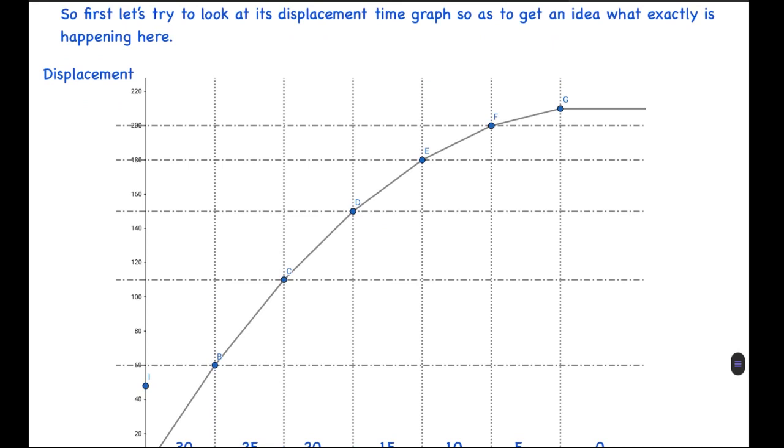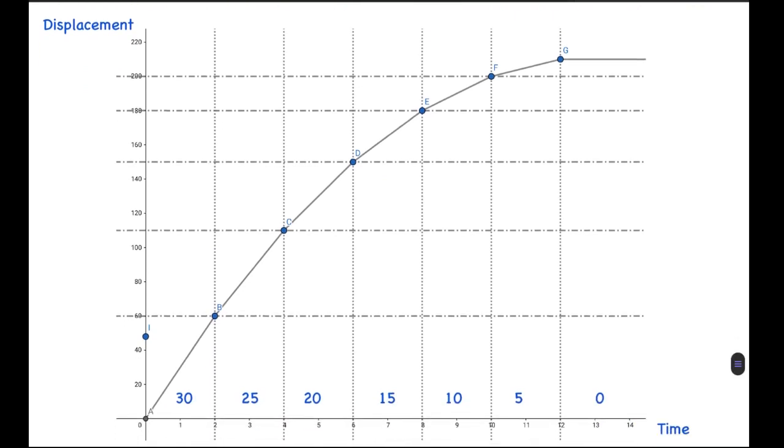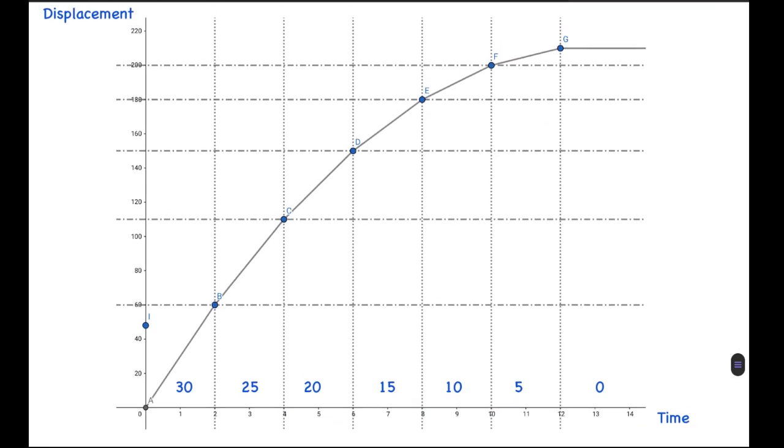First, let's try to look at the displacement-time graph as I said, to get an idea what exactly is happening here. The leopard starts from position A initially, and the deer was at position I initially. Initially in the first two seconds, the velocity was 30 meters per second. Gradually after every two-second interval, as I have marked in the graph, the slope of this curve, which is basically displacement over time or the velocity, keeps on decreasing. So it has been decreasing like 30, 25, 20, and so on.